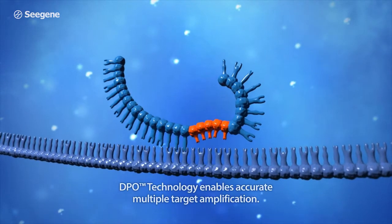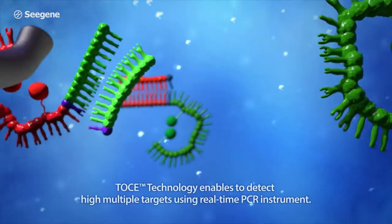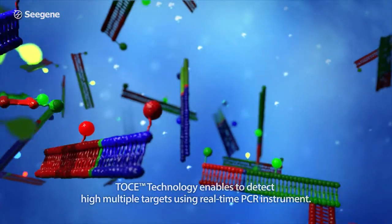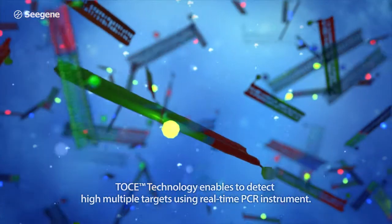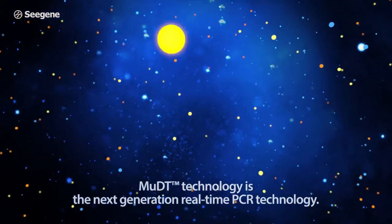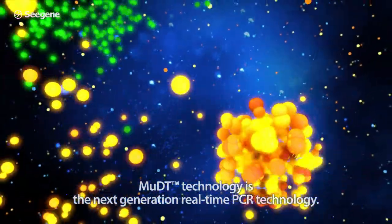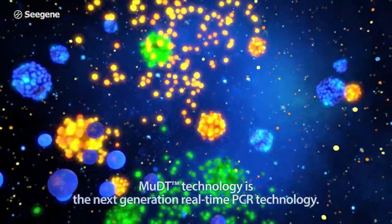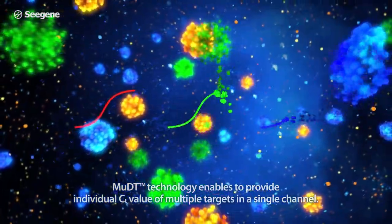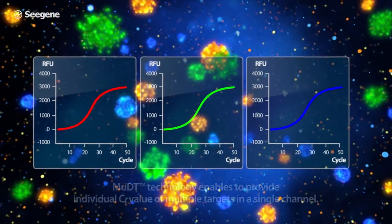Cgene is also the company behind DPO technology, providing superior multiplex PCR, and TOS technology for establishing arbitrary melting temperatures to identify targets. MUDT technology is the next-generation real-time PCR technology. The MUDT algorithm measures fluorescence intensity at multiple temperatures using DPO and TOS technology-enabled assays, and this technology combination paves the way for CT measurement of multiple targets in a single channel.